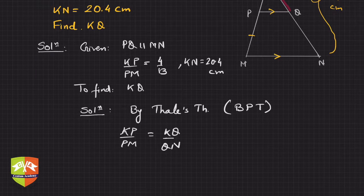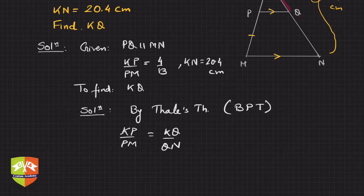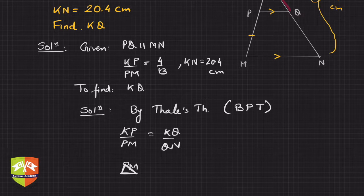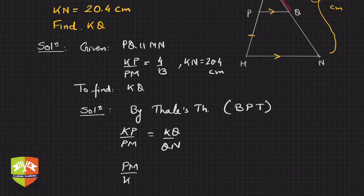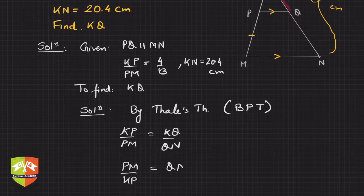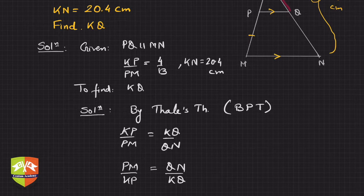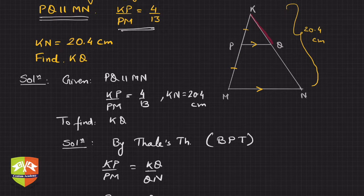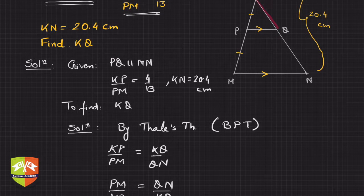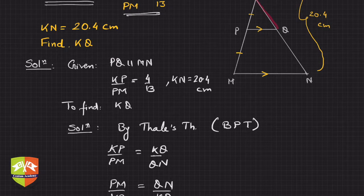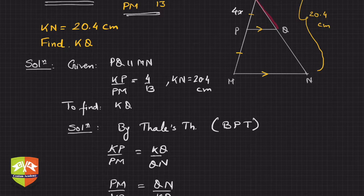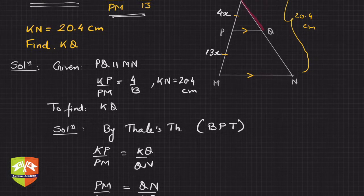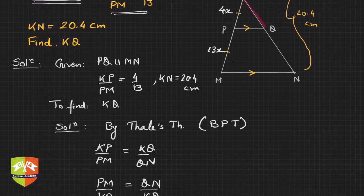You can take the reciprocal. So PM by KP is equal to QN by KQ. Why did I do this? You will now come to know, because we have to find out—see, KN is given. Or alternatively, let's say this is equal to x, so this is 4x and this is 13x. So 4x and 13x.